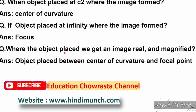Next question: where should the object be placed to get a real and magnified image? The answer is: the object should be placed between the center of curvature and the focal point. When the object is placed in the middle region between the focal point and the center of curvature, the image formed will be real and magnified.